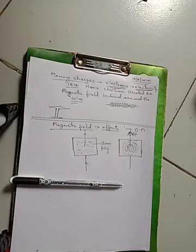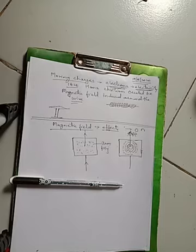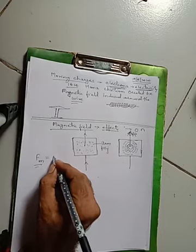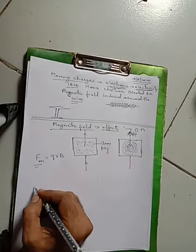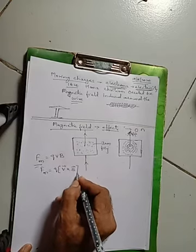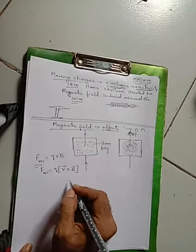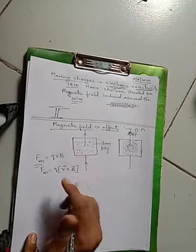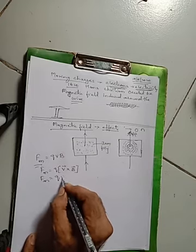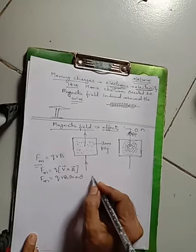Then we have seen the magnetic force. Magnetic force is the force experienced by moving charge particles or a current-carrying wire in a magnetic field. The magnetic force is given by Fm, and the formula is Fm equals q into v cross B. If you have to calculate the magnitude, it will become qvB into sin theta, where theta is the angle between v and B.